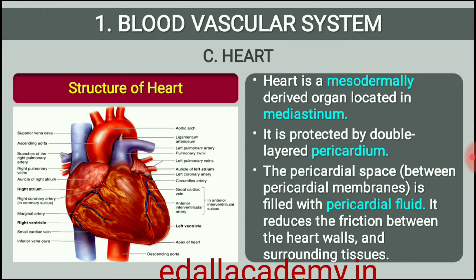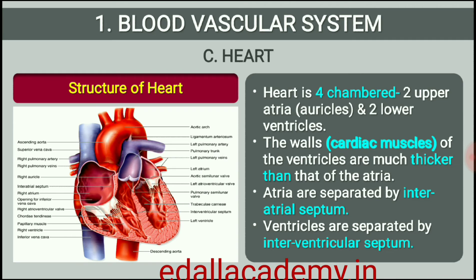Human Circulatory System. The human circulatory system, also called the blood vascular system, consists of a muscular chambered heart, a network of closed branching blood vessels and blood, the fluid which is circulated. The heart, a mesodermally derived organ, is situated in the thoracic cavity, in between the two lungs, slightly tilted to the left. It has the size of a clenched fist. It is protected by a double-walled membranous bag, pericardium, enclosing the pericardial fluid.